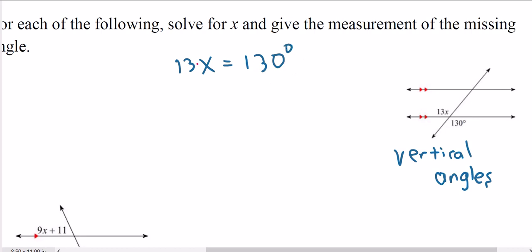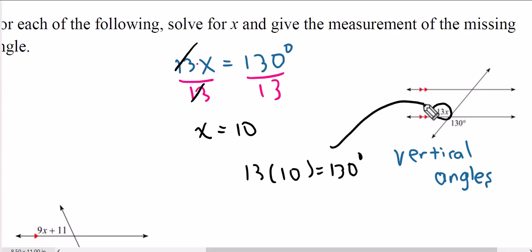We solve for x by dividing both sides by 13. We get that x equals 10. Now that's x. If I want to know what this is going to be I'm going to plug the 10 back in for x. If I do that I get that this angle right here is 130 degrees. However we knew that conceptually because vertical angles are congruent. So we know that this is going to be 130 degrees regardless.